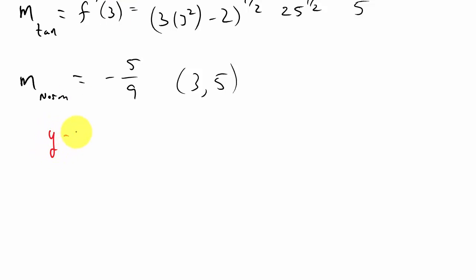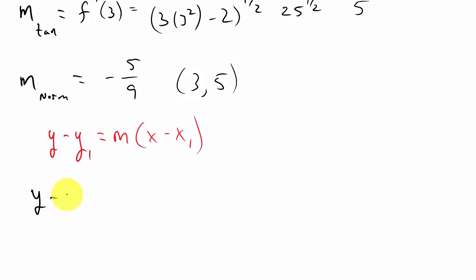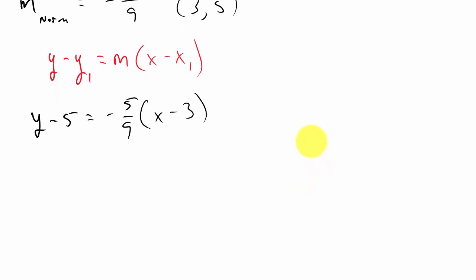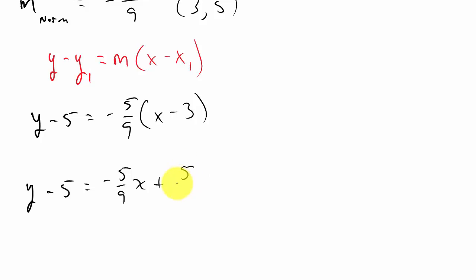Remember how to do that? We use the point-slope form of the line: y minus y1 equals m times x minus x1. Now I just plug everything in. So I've got y minus 5 — that's y1 — and x1 is 3. That equals m, which is my slope of negative 5 over 9, times x minus 3.